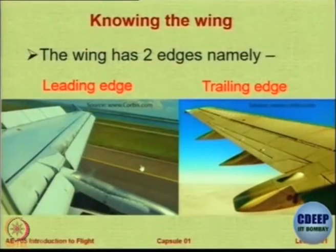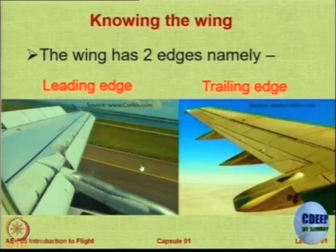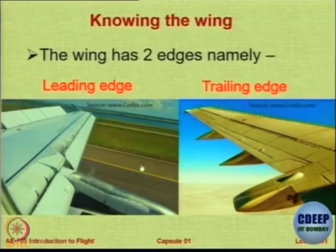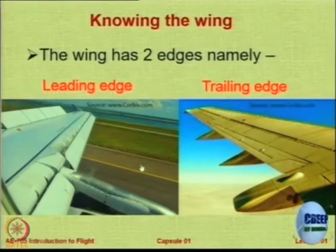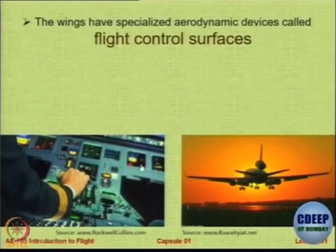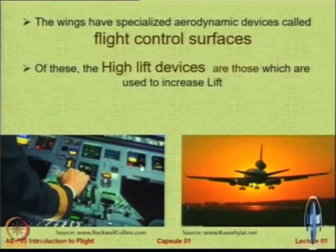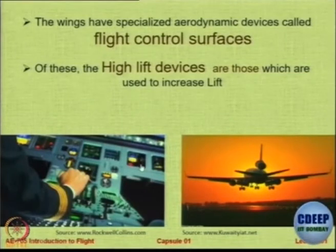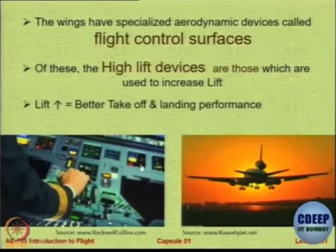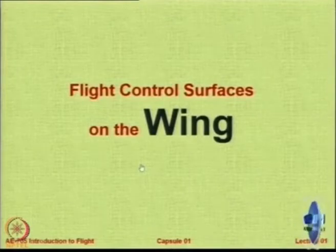Let us see the two wing edges in photographs. We have the leading edge as seen from one of the windows — it is in the front; I can see the engine cowling below. The one on the right is the trailing edge, which is the rear portion. The wing is basically the device that produces maximum lift, and flight control surfaces mounted on the wing help us in controlling the flight. We also have high lift devices to increase lift.